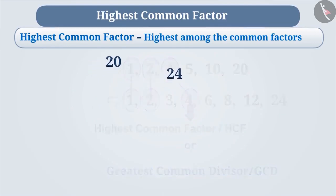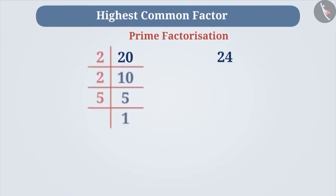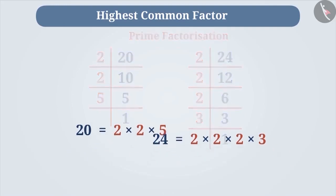Let's learn to find the HCF of the given numbers. Let's find the HCF of 20 and 24. First, perform the prime factorization of these two numbers. The prime factorization of 20 gives us 20 = 2 × 2 × 5. Similarly, the prime factorization of 24 gives us 24 = 2 × 2 × 2 × 3.